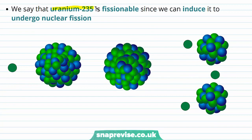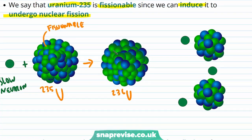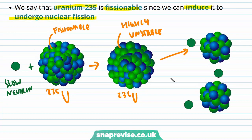We say that uranium-235 is fissionable since we can induce it to undergo nuclear fission. Here's an illustration of the whole process: we add a slow neutron to the fissionable uranium-235 to produce uranium-236, which is highly unstable, and this then produces two product nuclei — barium-141 and krypton-92.